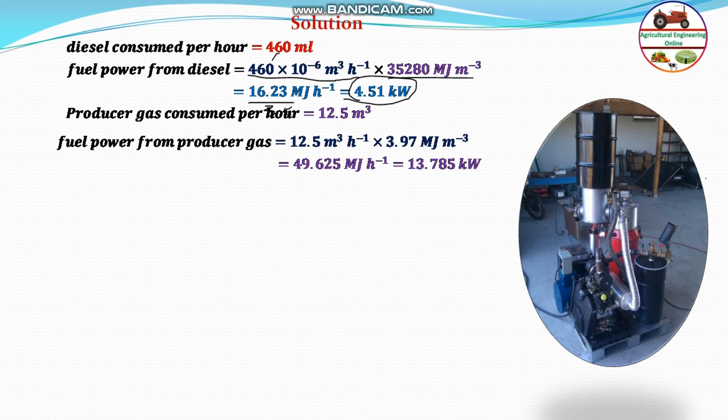The fuel power from producer gas will equal 49.625 megajoules per hour. If you convert it to kilowatt, it will be 13.785 kilowatt. Combining the diesel fuel and producer gas, the total fuel power will equal 4.51 plus 13.785, which is 18.3 kilowatt.